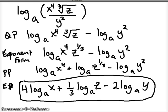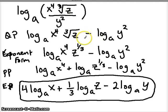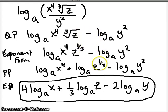So these are kind of like puzzles — you just got to unwrap them. Choose the property you want to use to get rid of some things. Undo the products, undo the quotients, write all your radicals as exponents, and then get rid of those exponents using that exponent property.